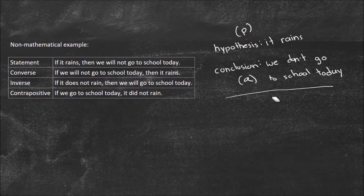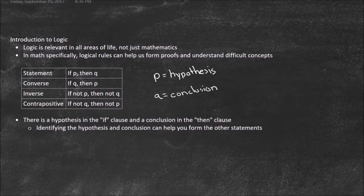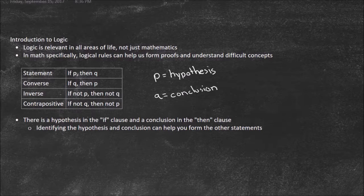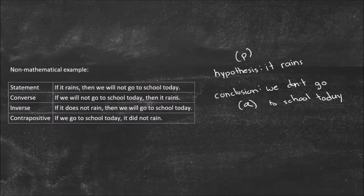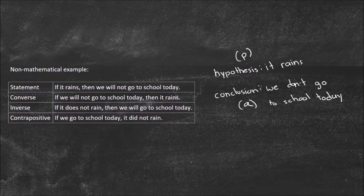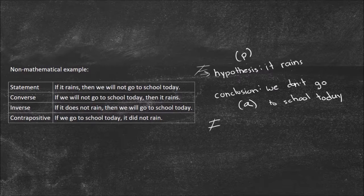Now let's look at the inverse. This says: if not P, then not Q. Basically, we're just adding a 'not' in front of both parts of the original statement — we make both the hypothesis and the conclusion not true, or negative, and then we have the inverse. It's the complete opposite. So: 'if it does not rain' — that's not P — then 'we will go to school,' because that's the same as saying we will not not go to school today, which means we will go to school. That's how you get the inverse.